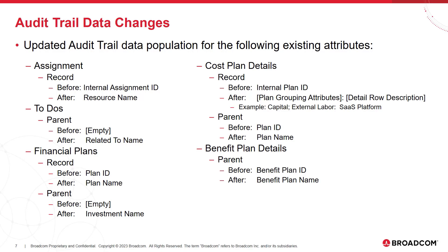The biggest change was to the cost plan details. Before, we were only populating in the record attribute the internal plan ID, which was hard to reference and figure out what the audit data related to. After the changes we made this release, we've changed that record value to be your plan grouping attributes and any detailed row description should you have one.